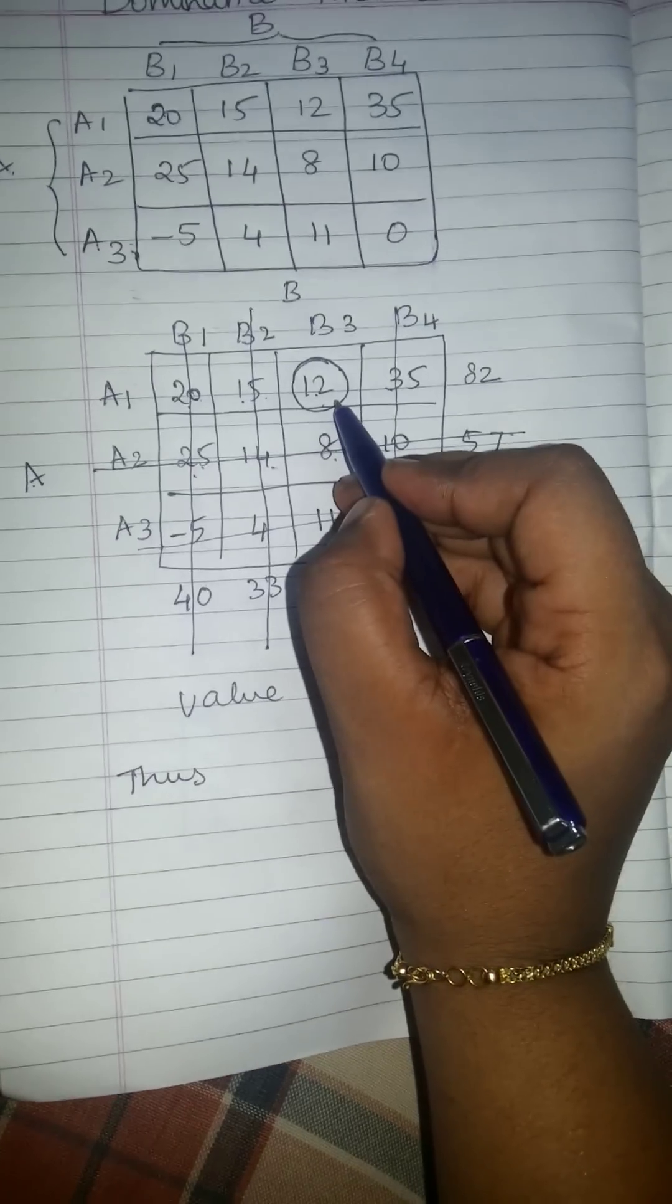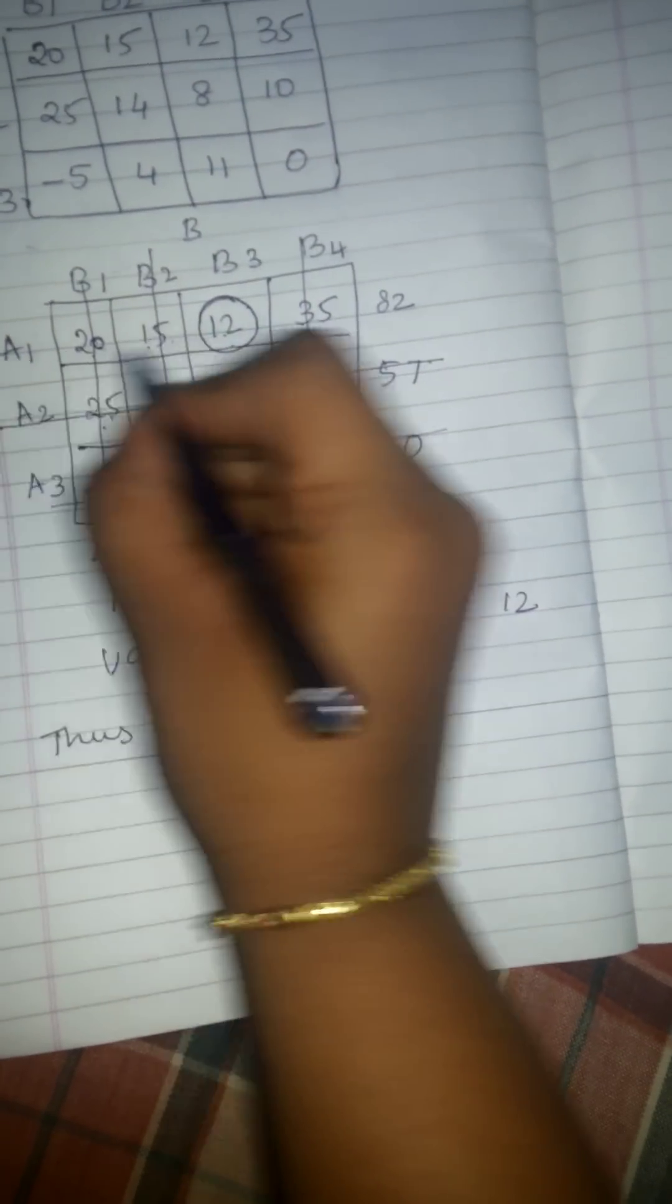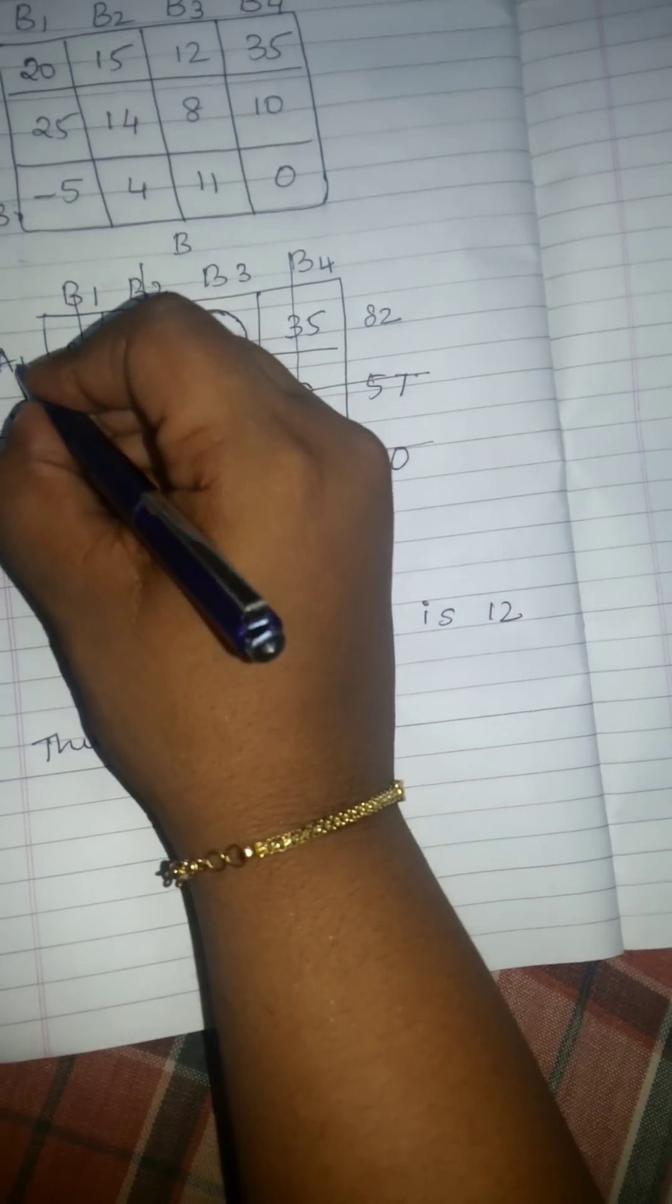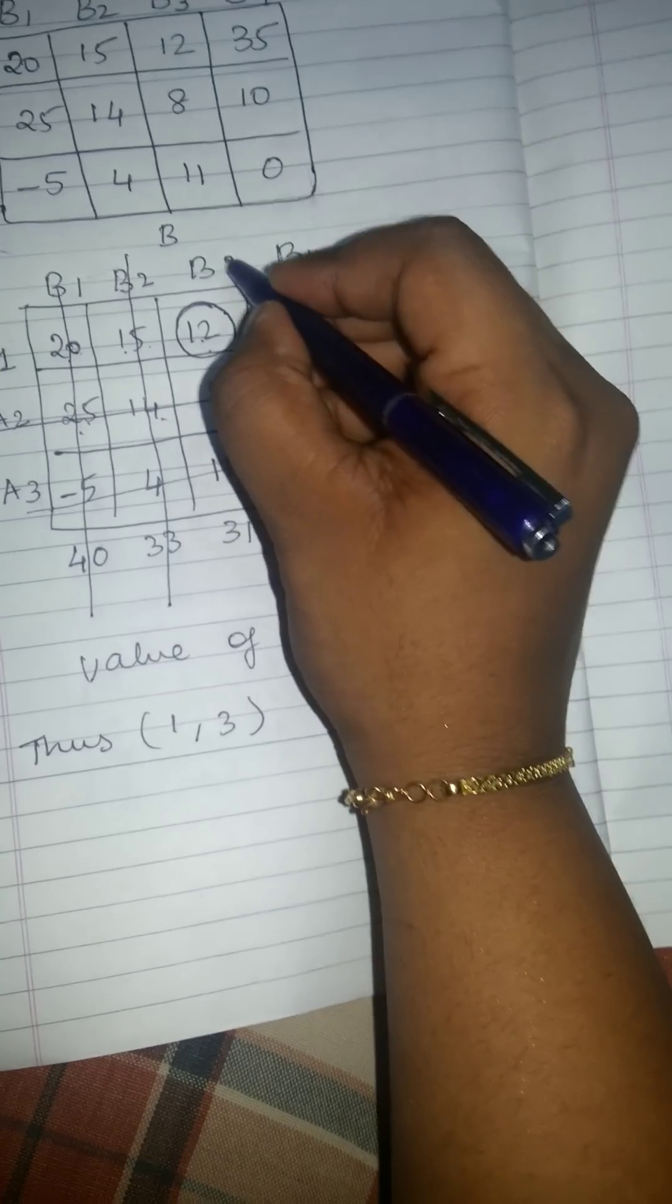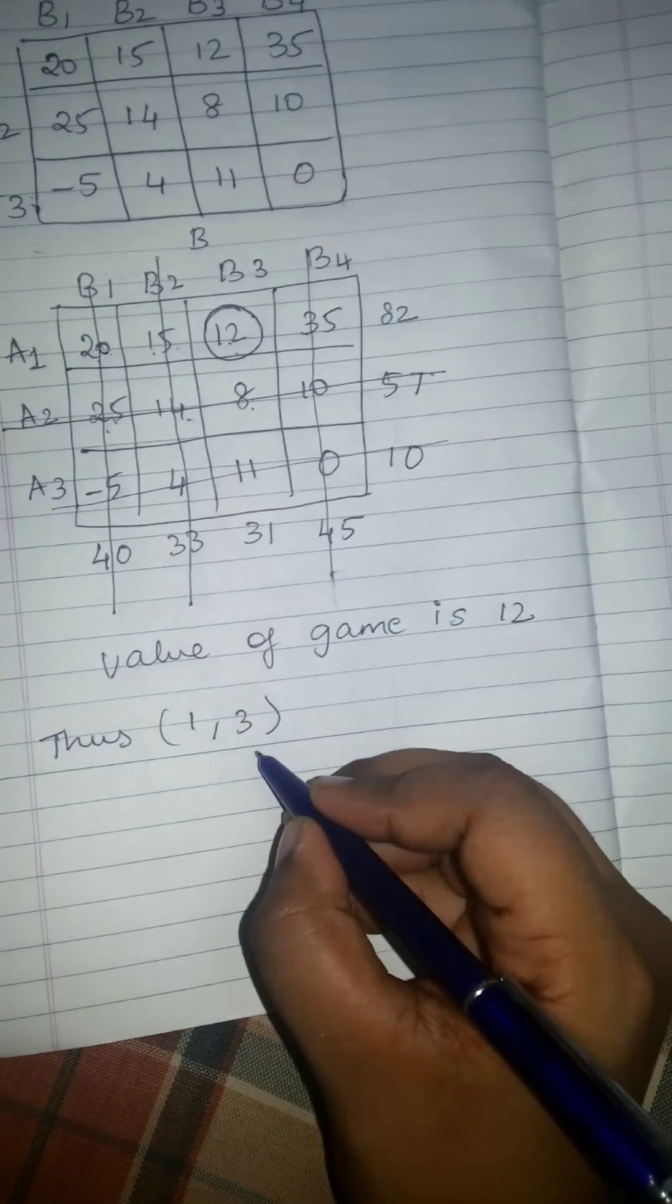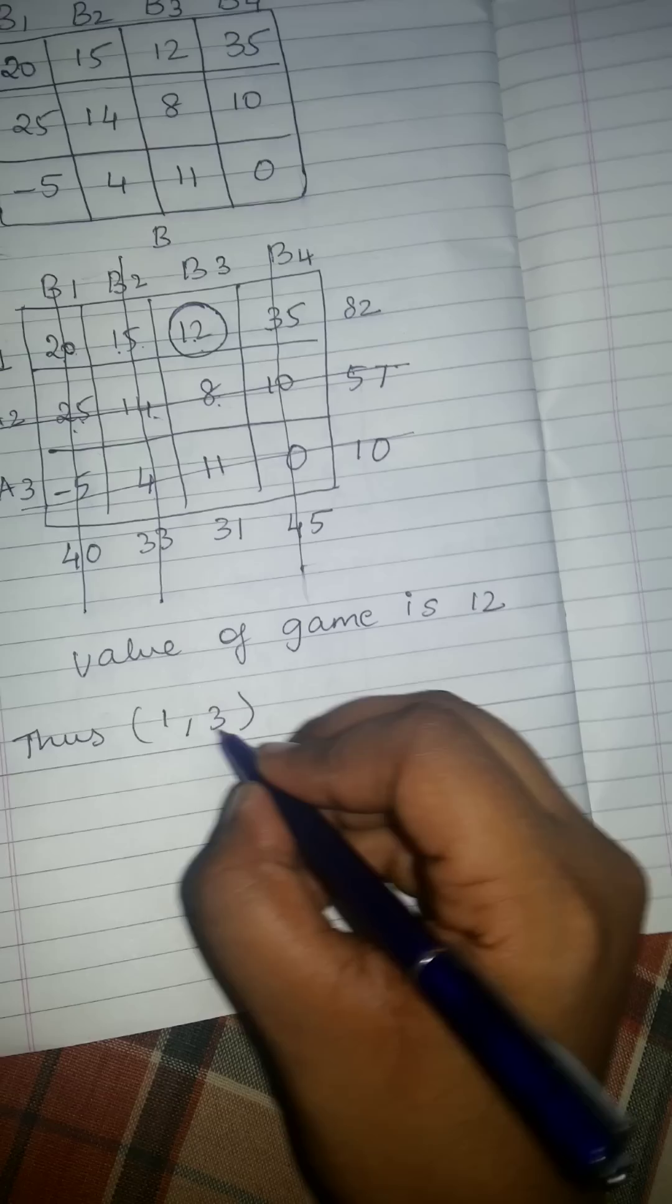And it is not cancelled till the end. Thus, 1,3. That is nothing but A in eighth row. This is the first row. And in Bth column, this is the third row. So Bth column, this is the third column. Thus it is 1,3.